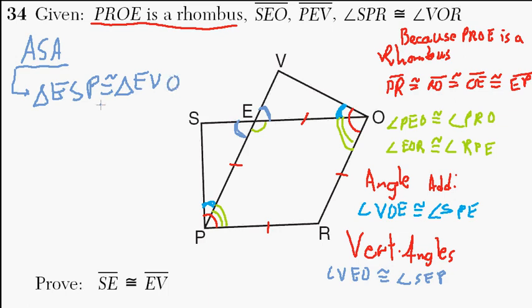And I want to prove that SE is congruent to EV. And I basically have that by corresponding parts of congruent triangles are congruent. Corresponding parts of congruent triangles are congruent. I'm not going to write that all out. But basically, because of that, this is true.